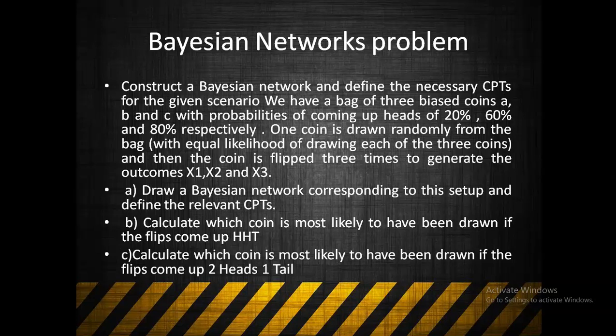The questions are: draw the Bayesian network for this setup and define the relevant conditional probability table. Also, calculate which coin is most likely to have been drawn if the flips come up as Head, Head, Tail — two heads and one tail.